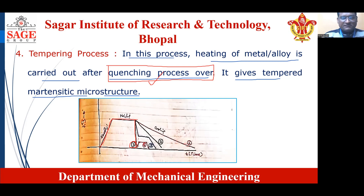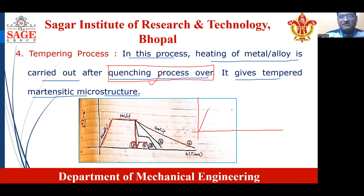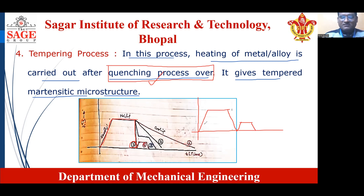The quenching process ends at curve 5. Then again the material is heated up to a certain temperature, held at constant temperature for some time, and then allowed for quenching — this is the tempering process. For the tempering process, the steps follow like this: heating, then holding, then martempering or quenching. After completing martempering or quenching, again the material is heated up to a certain temperature, then a soaking period is allowed for some time, and then again it is quenched. This process is known as the tempering process, and it reduces the hardness that was achieved in the martempering process.